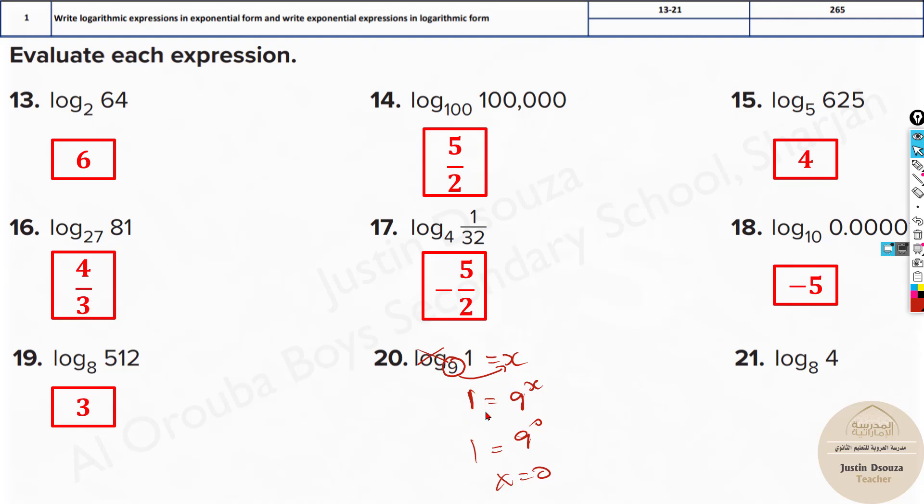So from this log, this over here, the second step would be the exponential form. I'll just write the exponential form over here as well.